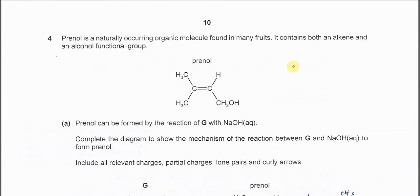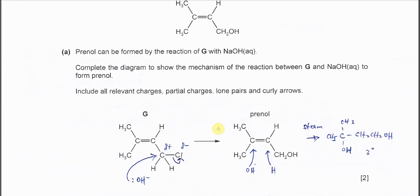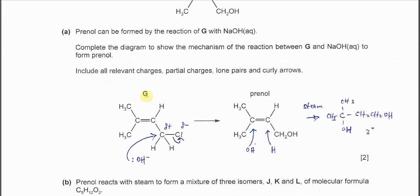Question 4. This question is about the molecule called prenol and the related reaction. Part A, prenol can be formed by reactions of G with sodium hydroxide aqueous. So this is the compound G and this compound G will form the prenol. The difference is this part. So from here we know that it must undergo the nucleophilic substitution.